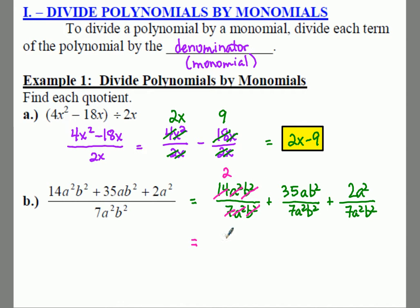14 and 7 cancel to give you 2, the a² terms are gone, b² terms are gone—all you get is 2. Plus, 35 and 7 cancel to give 5. Your a and a² means you have more a's on the bottom, so we get a denominator. The b² terms are gone, so we have 5/a. For the third term, 2 and 7 don't cancel, but the a² terms are gone and b² stays in the denominator. So your final answer is 2 + 5/a + 2/7b².